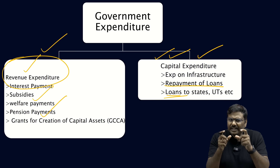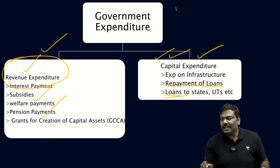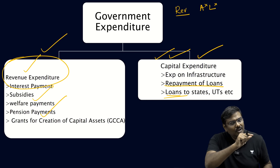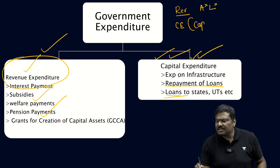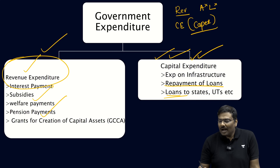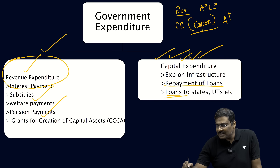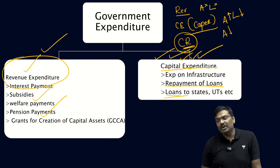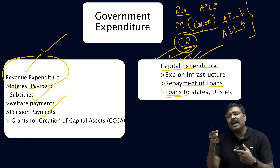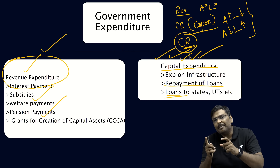One simple way to differentiate: in case of revenue — either expenditure or receipts — the assets and liabilities of the Government of India do not change. Whereas under capital expenditure (capex), either the assets of Government of India increase or liabilities decrease. Under capital receipts, the assets held by the Government of India go down or liabilities increase. This is how you differentiate between revenue and capital, and within capital, between capital receipts and capital expenditure.